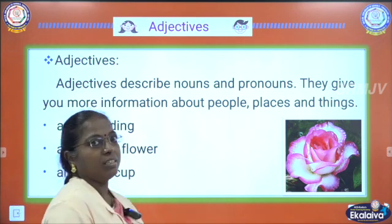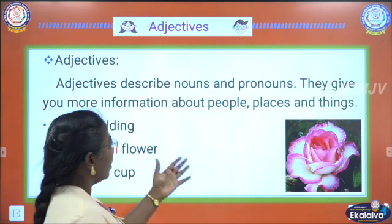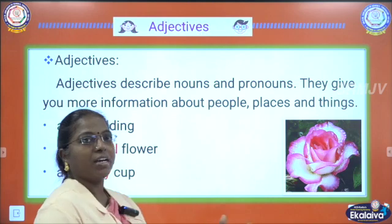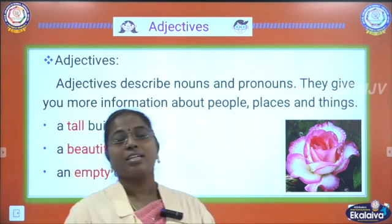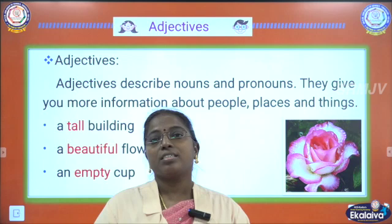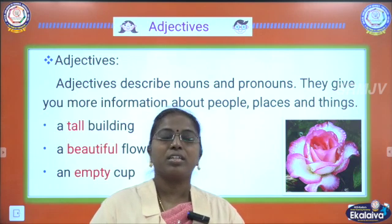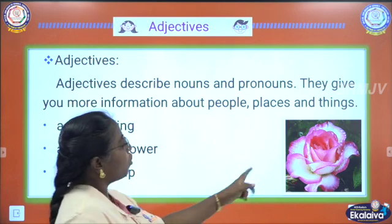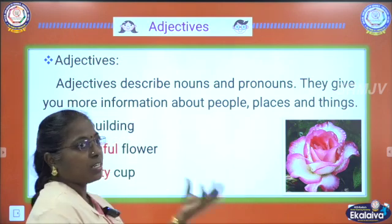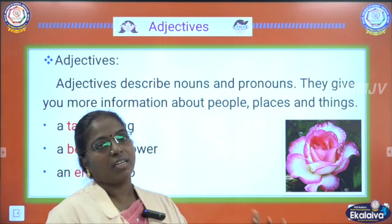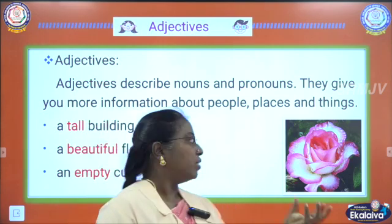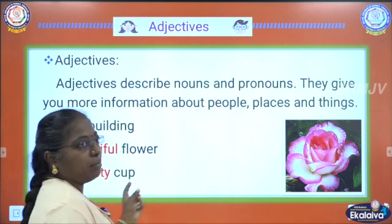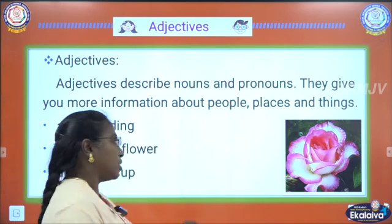Example: a tall building — we are describing about the building, about the place. Or a flower — whether the flower is beautiful, which color it is, whether it is green in color. We are describing about the flower. A beautiful flower. And a tall building and empty cup — whether the cup is empty or whether anything is there inside, we are describing about the cup. So tall, beautiful and empty are all adjectives.